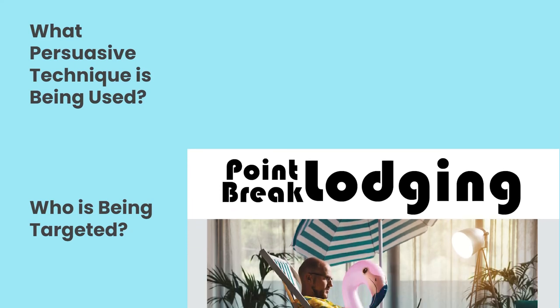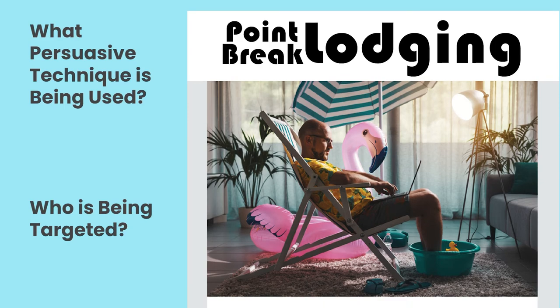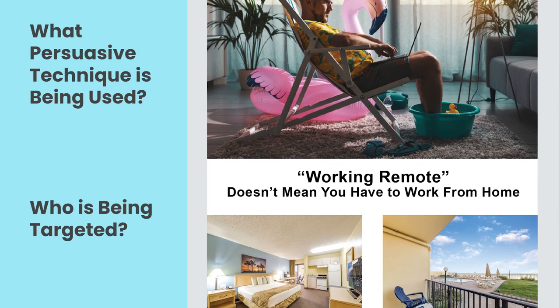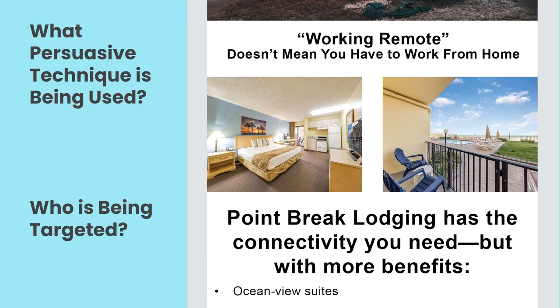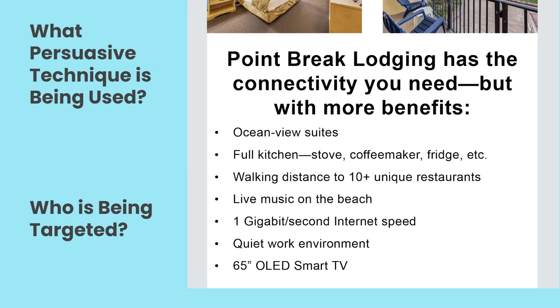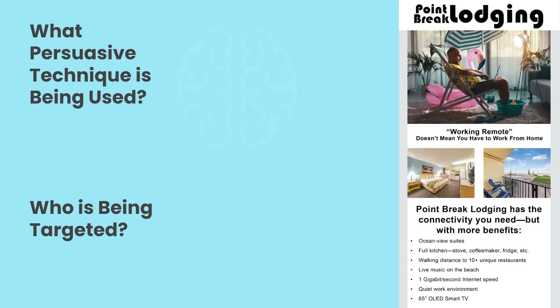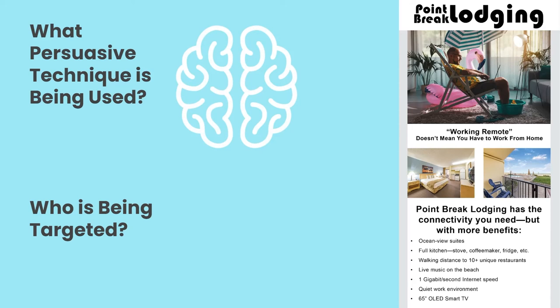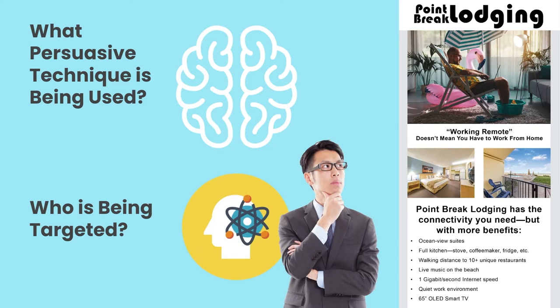By process of elimination, you can probably already guess the fourth email's technique. Point Break Lodging: 'Working remote doesn't mean you have to work from home. Point Break Lodging has the connectivity you need, but with more benefits' — followed by a bullet point list. The dead giveaway is all the specific information provided. This piece of marketing relies on logos to persuade people that this property is worth staying at — and the associated personality style is analytical. A bullet point list of benefits might not be very persuasive to everyone, but analytical people prefer concrete information to wishy-washy sentiments.